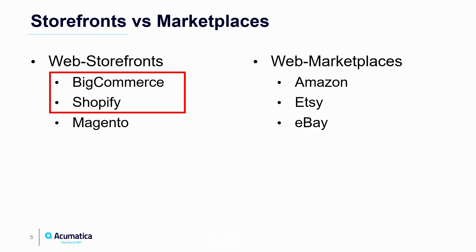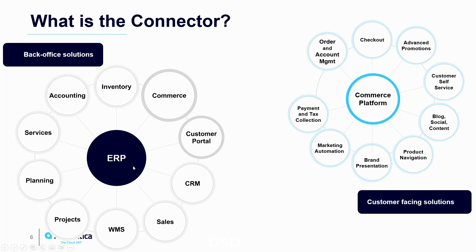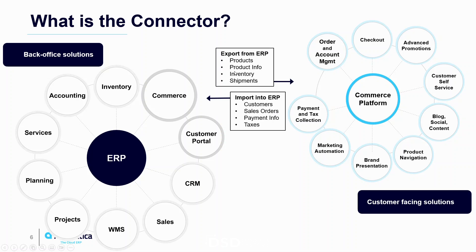So what is the connector? We have our ERP in its own bubble as our back-office solution, handling everything from inventory to accounting to CRM to sales to WMS. Then we have our commerce platform like BigCommerce, which handles checkout, advanced promotions, customer self-service, and marketing automation. Our connector allows us to push data from our ERP — like products, product info, inventory, and shipments — and pull data in from the commerce platform like new customers, new orders, and payments. We also let the commerce platform calculate taxes for retail orders, and then pull all of that data into Acumatica.